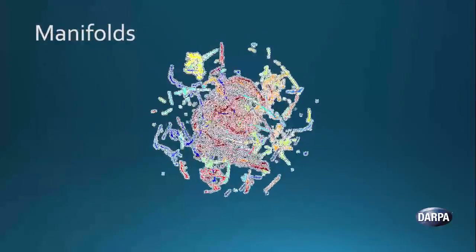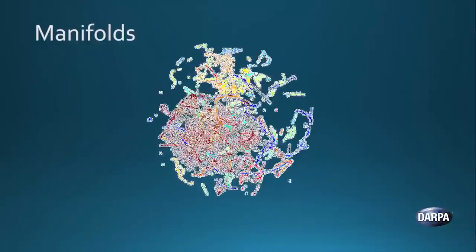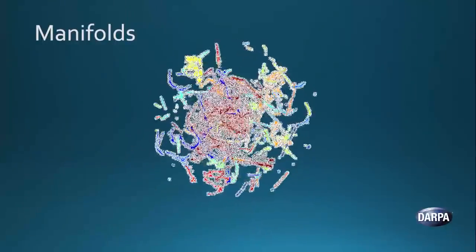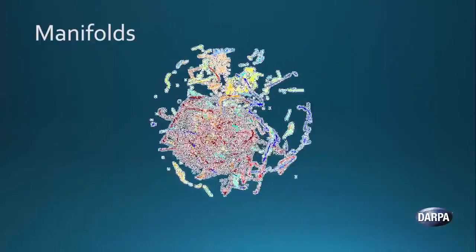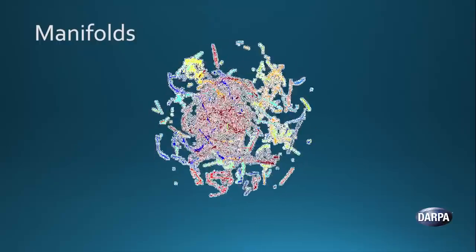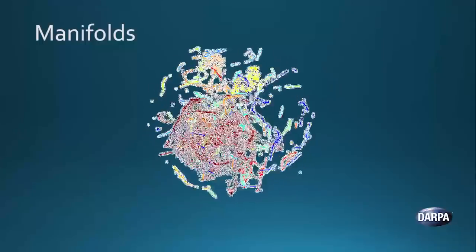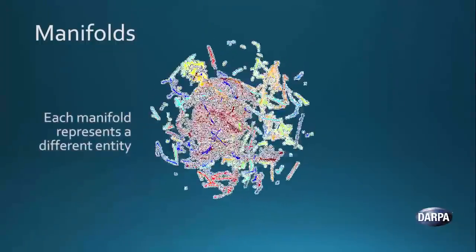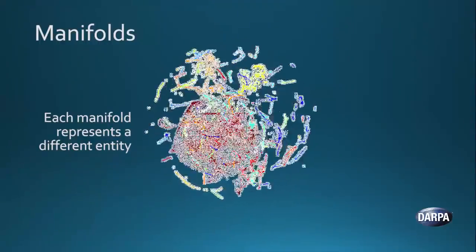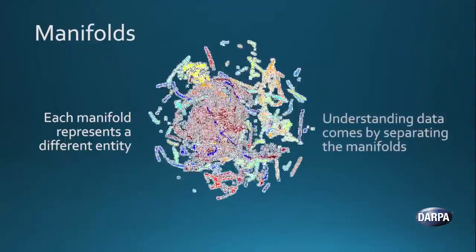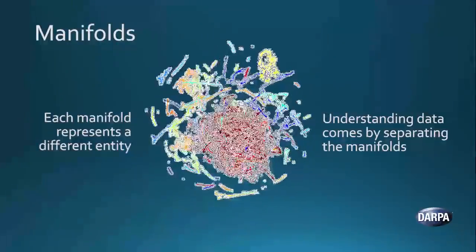And it turns out that when we're dealing with the natural world, the data that we care about forms these clumps. Let me show you an example. In this rotating sphere that you see, we've taken data from a natural source and brought it down to three dimensions. And you can see that the different kinds of data have clumped together. Sometimes they're in stringy sort of shape, sometimes in sort of fuzzy sponges. That red shape that you might see in the middle is actually sort of like an orange peel shaped, two-dimensional thing that curves in on itself. Each of these manifolds, each of these clumps represents a different entity. And the way that an AI system will understand the data is it will separate the different clumps.